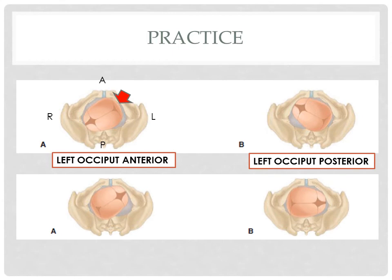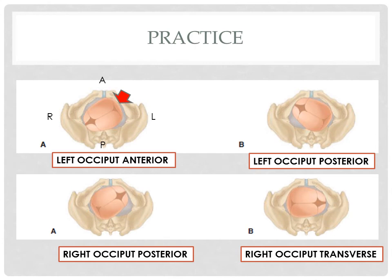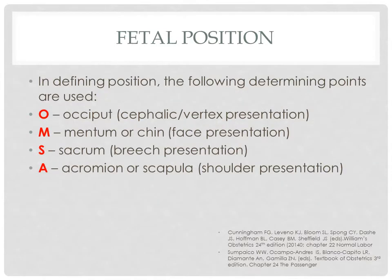Next is right occiput posterior. And lastly, this is right occiput transverse because the occiput is along the transverse line. In defining position, the following determining points are used: occiput for cephalic or vertex presentation; mentum or chin for face presentation; sacrum for breech presentation; and acromion or scapula for shoulder presentation.